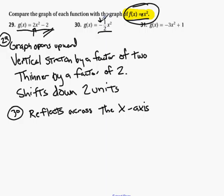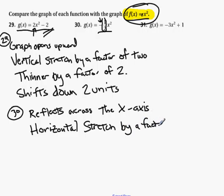The fact that this, looking just at the number now, not the sign, 1 half is less than 1, so this gets wider, or we would call horizontal stretch. Horizontal stretch by a factor of 1 half. Or you could say wider by a factor of 1 half.